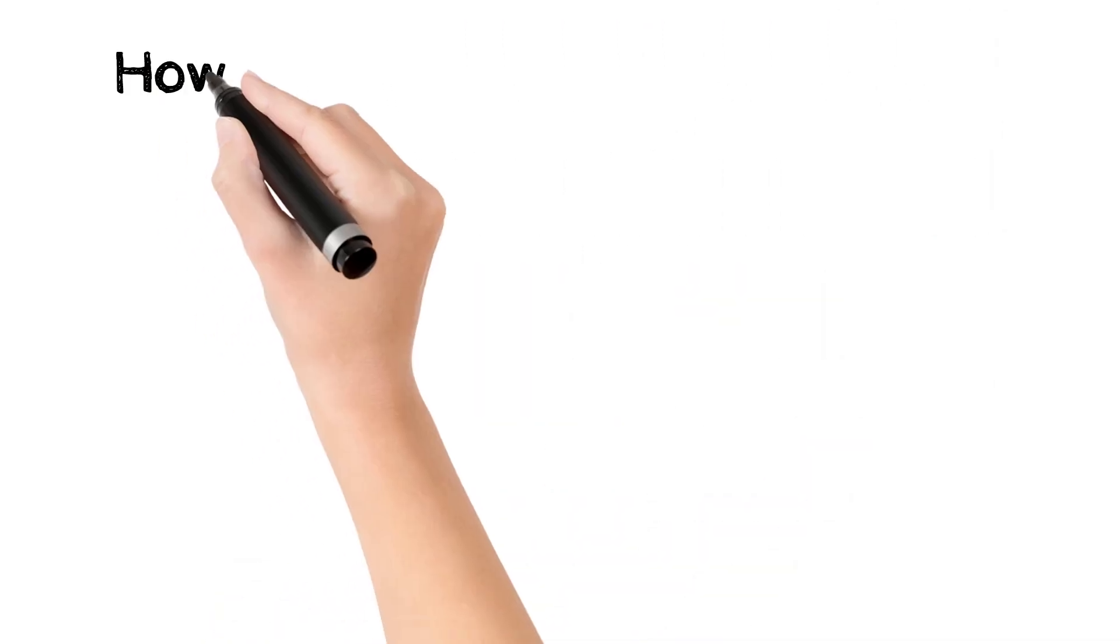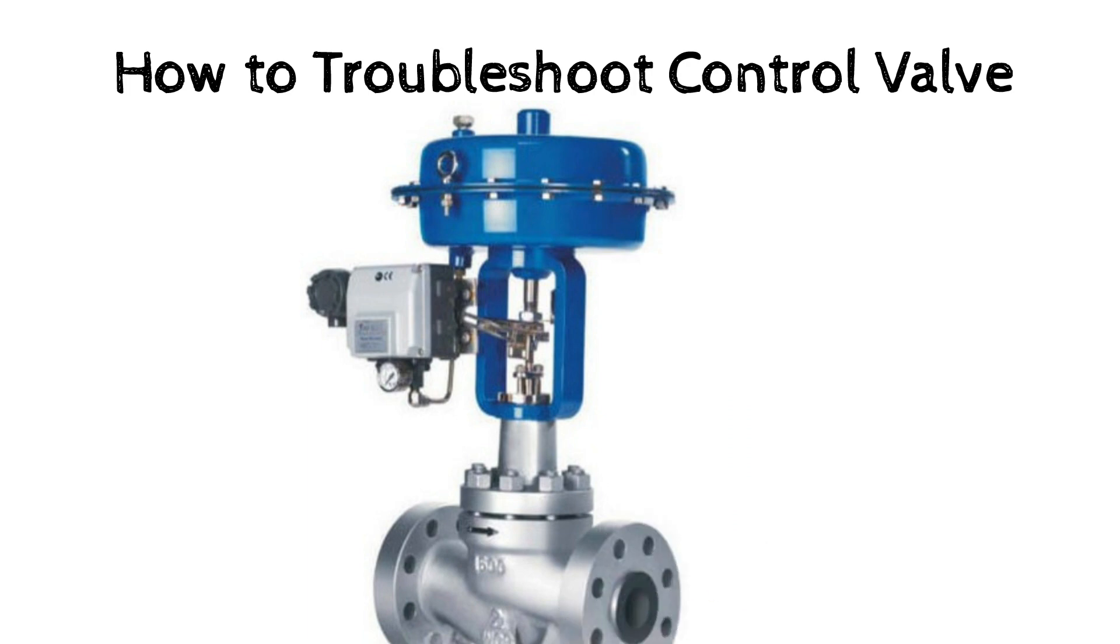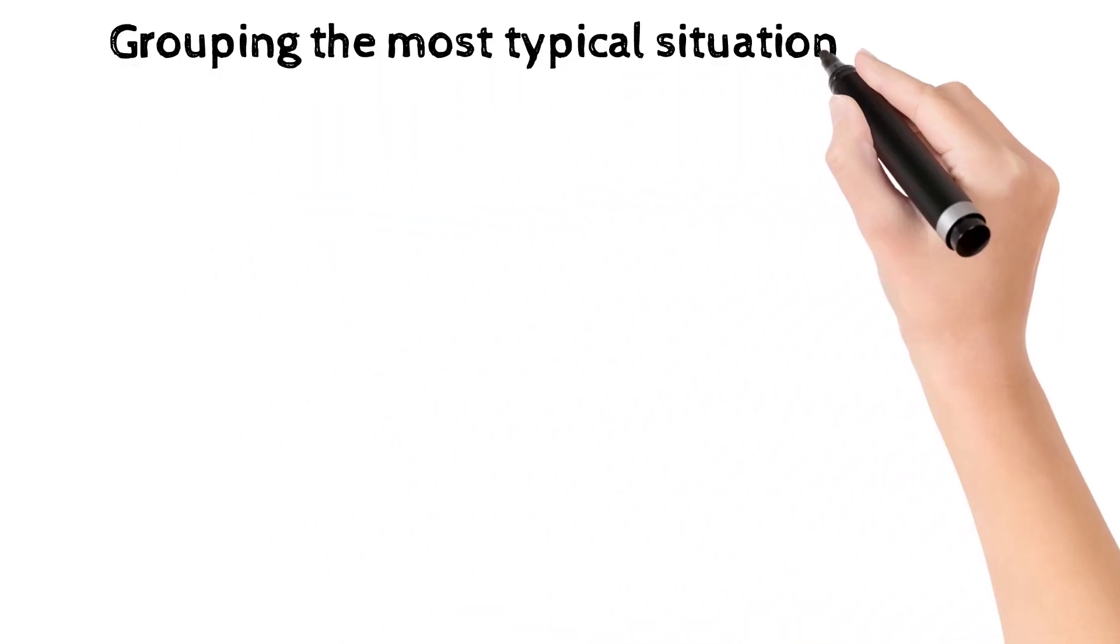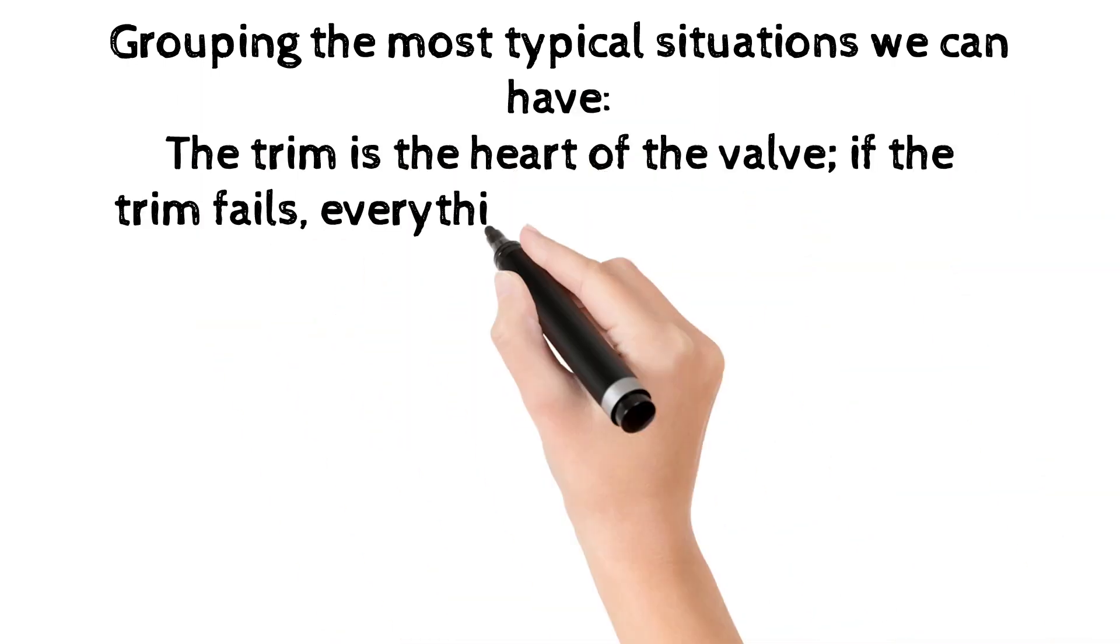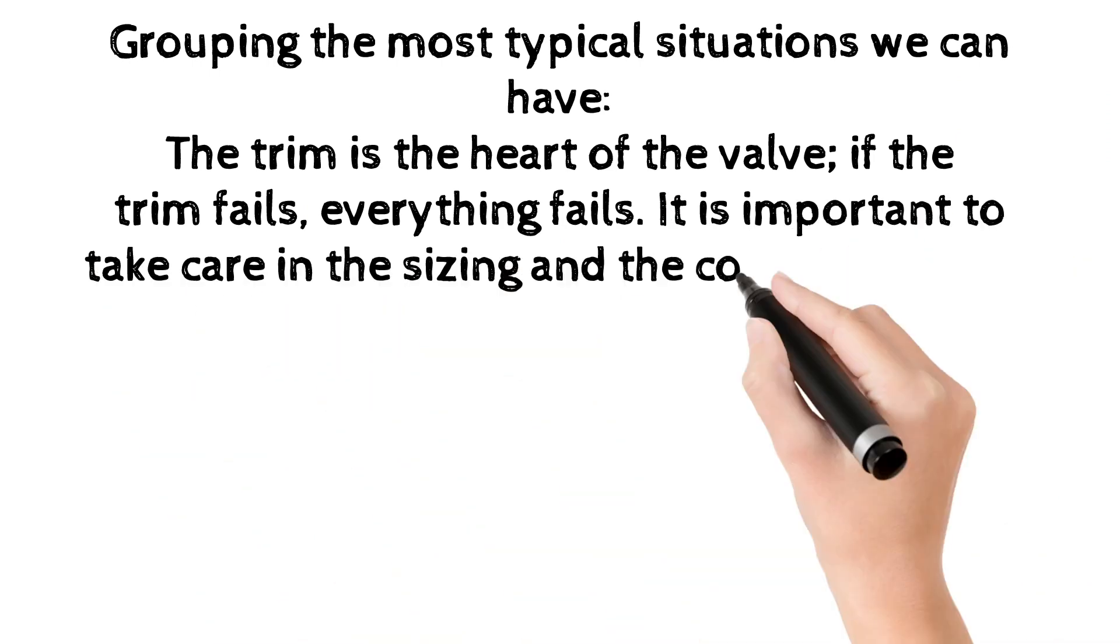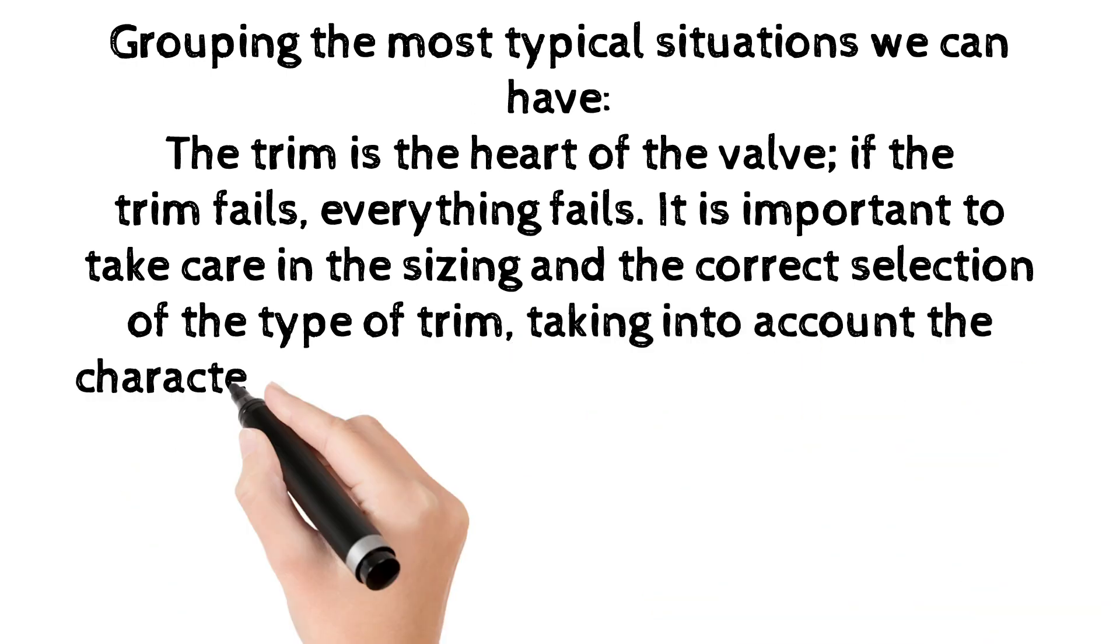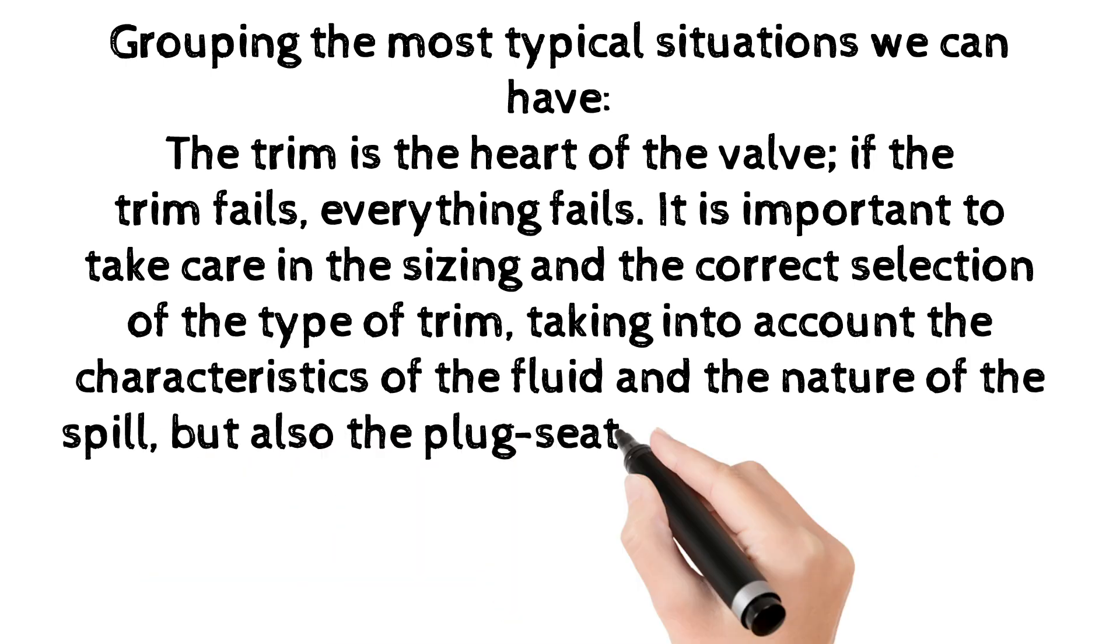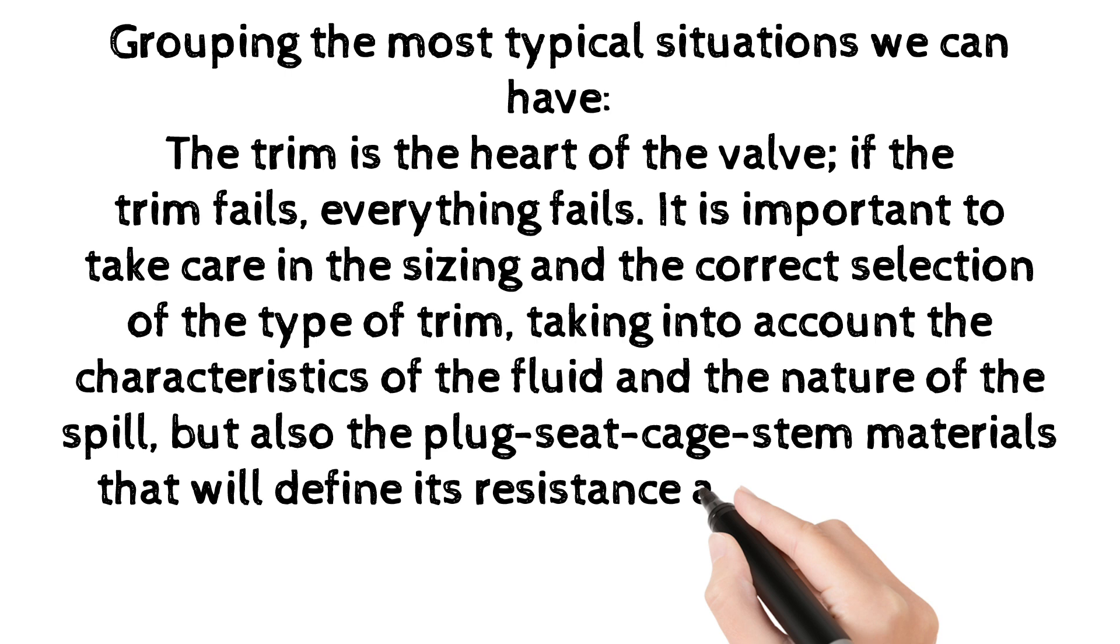How to troubleshoot control valve. Grouping the most typical situations we can have, the trim is the heart of the valve. If the trim fails, everything fails. It is important to take care in the sizing and the correct selection of the type of trim, taking into account the characteristics of the fluid and the nature of the spill, but also the plug-seat cage stem materials that will define its resistance and durability as the reliability of control over time.